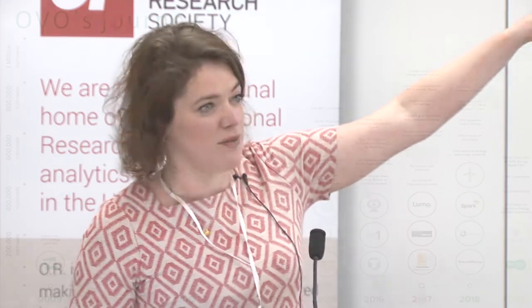A little bit about Ovo Energy then. Competition was introduced into the retail energy market back in 1999. Here in the UK we have a choice about who supplies our energy. The market is split: we've got generators of energy, people distributing energy, and then people like Ovo who are selling energy to customers. Ovo was launched 10 years ago and is now the largest independent supplier, but still with only 5% market share — around 1.5 million customers.